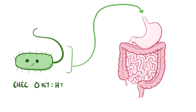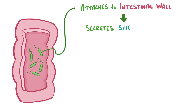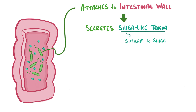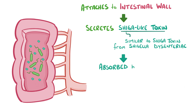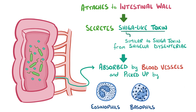After entering the digestive tract, E. coli O157:H7 attaches to the intestinal wall and secretes a toxin called shiga-like toxin. The toxin gets its name due to its structural similarity with shiga toxin produced by Shigella dysenteriae, another bacteria that causes bloody diarrhea and subsequent hemolytic uremic syndrome. That toxin gets absorbed by intestinal blood vessels and is picked up by immune cells like eosinophils, basophils, and neutrophils.